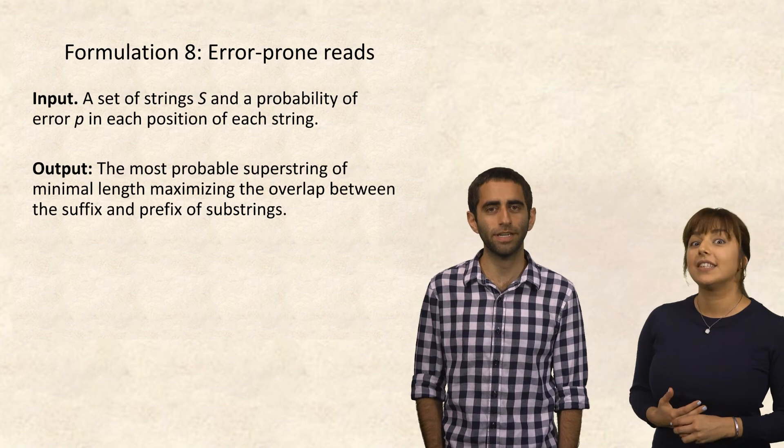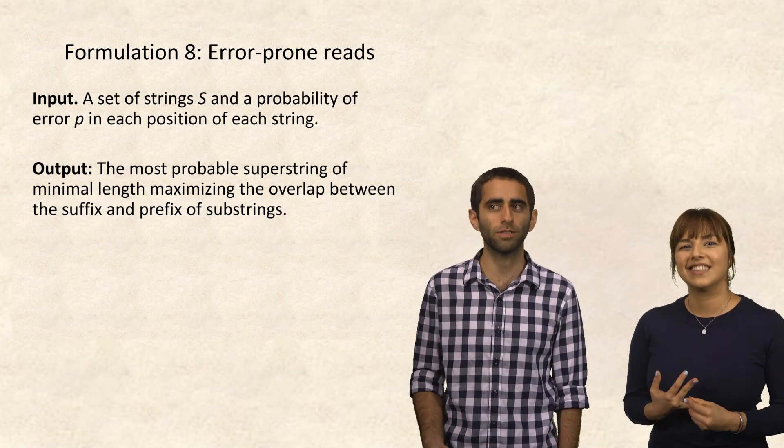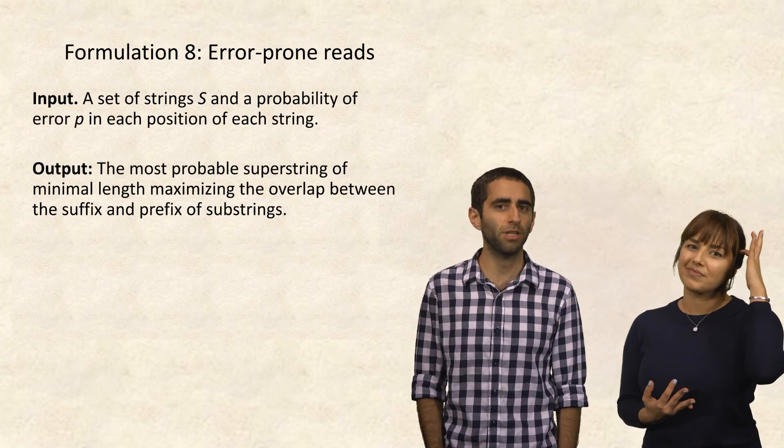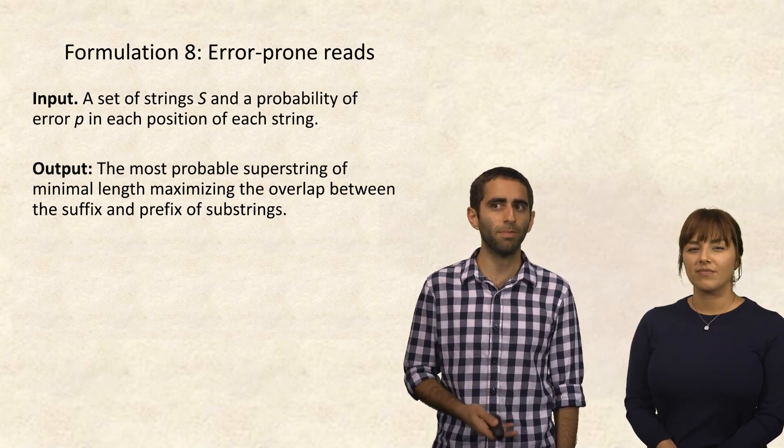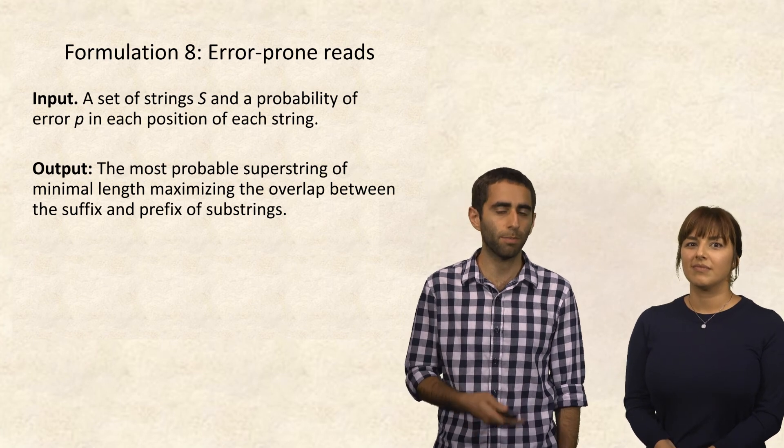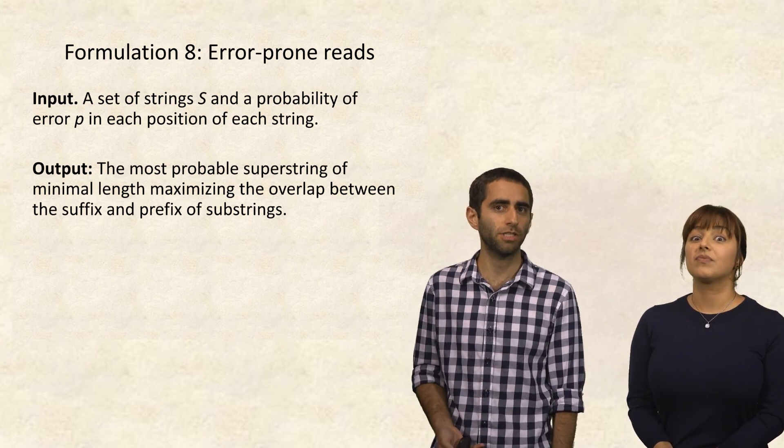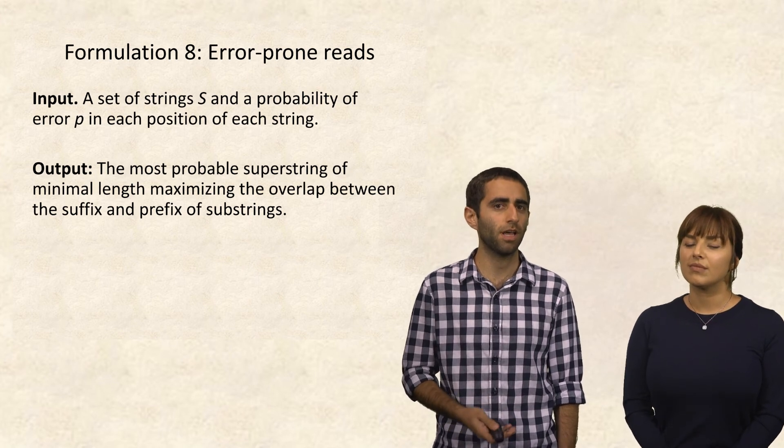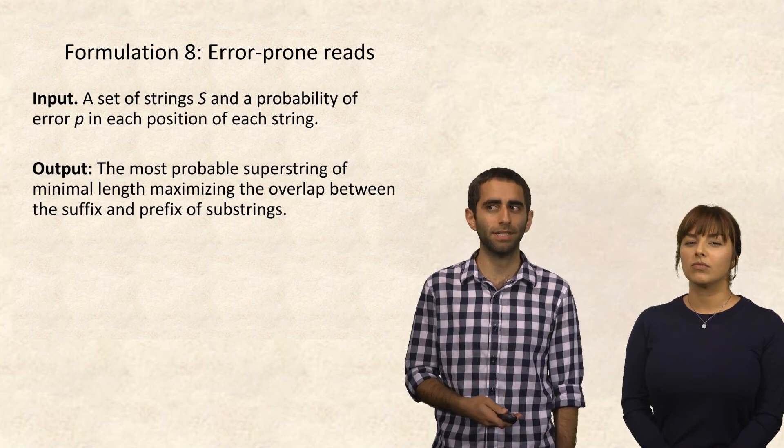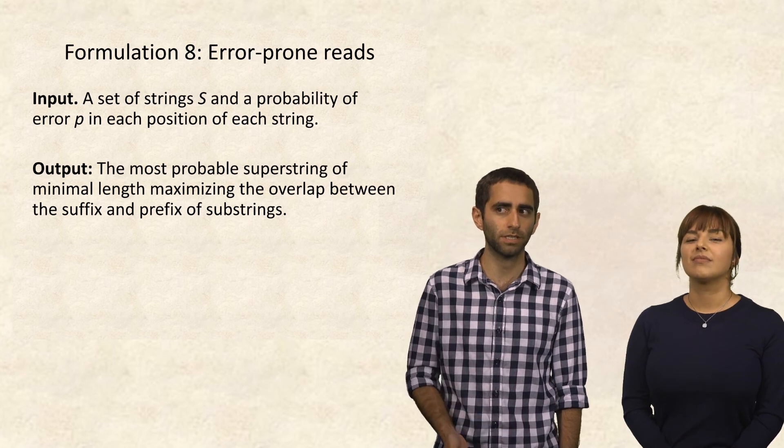Error-prone. Okay, so now if we have errors in our reads, what if we change the formulation to instead be, where the input is a set of strings s and a probability of error p for each position in the string? And then we could say that the output is the most probable superstring of minimal length that maximizes the overlap between the suffix and prefix of substrings.